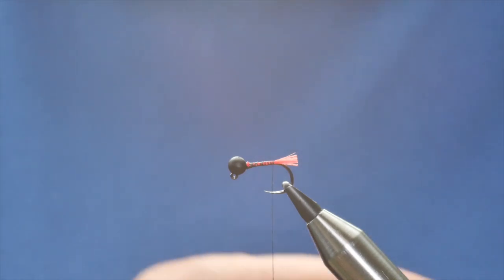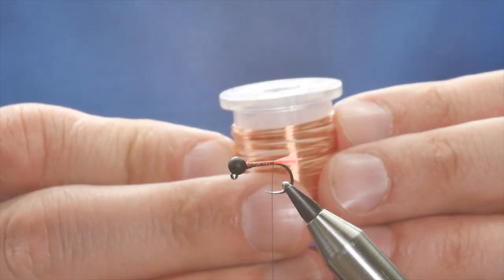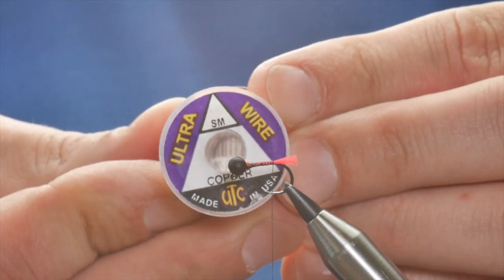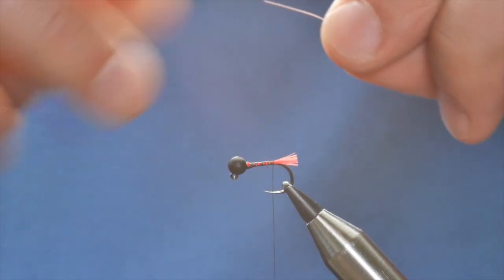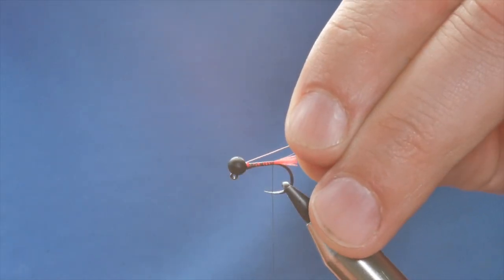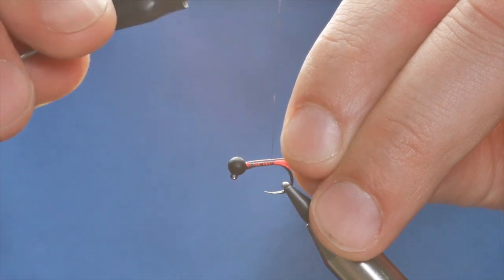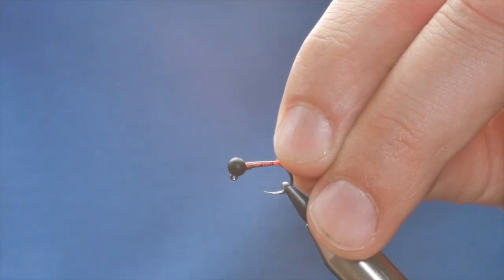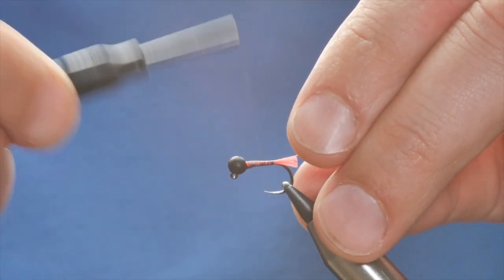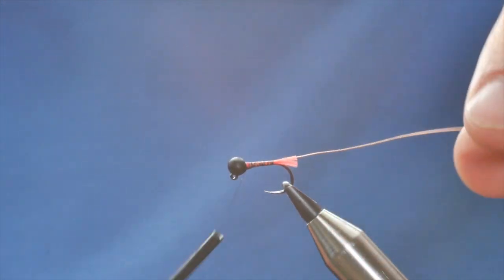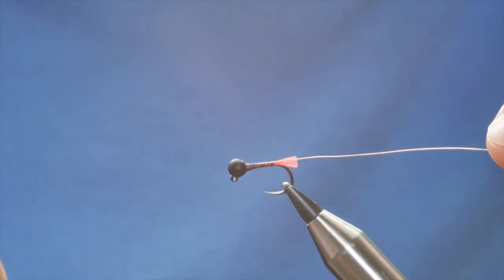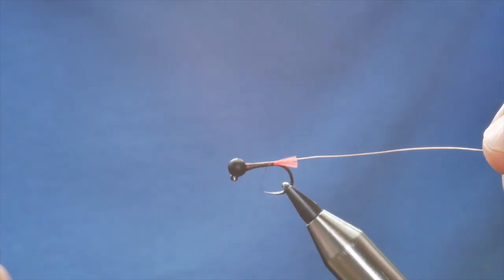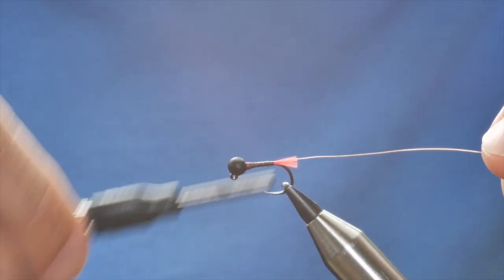Okay, I'm going to add a wire rib now and this is the UTC Ultra, it's the small, and as you can see it's a copper wire. So basically I'm going to push this into the slot of my bead, catch it in place, just do some open turns to hold it into place, and then I'm going to come down and build my body.